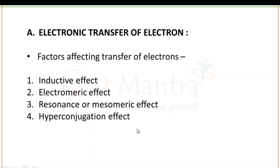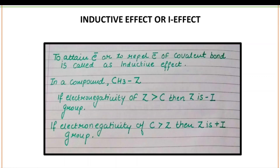Number one is electronic transfer of electrons. The transfer of electrons majorly depends on four effects: inductive effect, electromeric effect, resonance or mesomeric effect, and hyperconjugation effect. In today's lecture, we will discuss the first effect — the inductive effect.